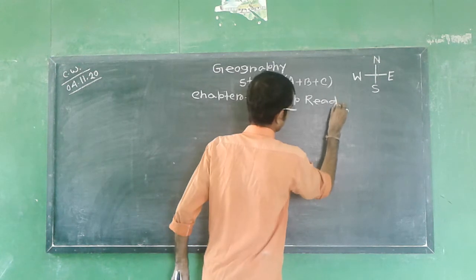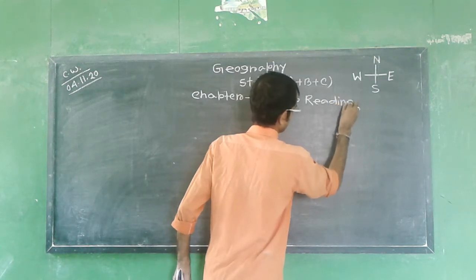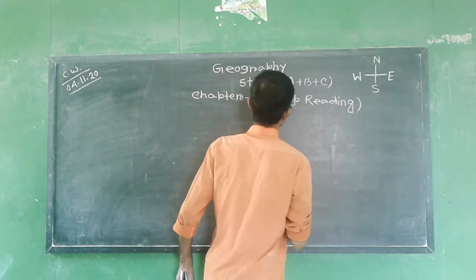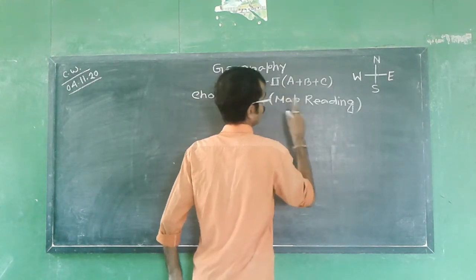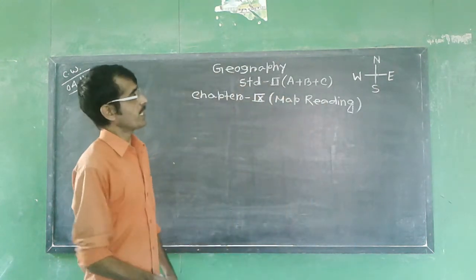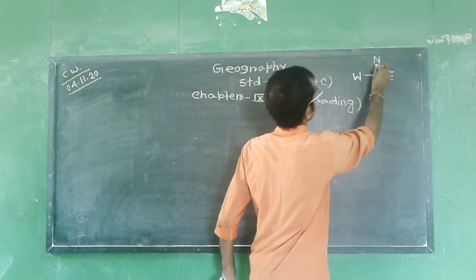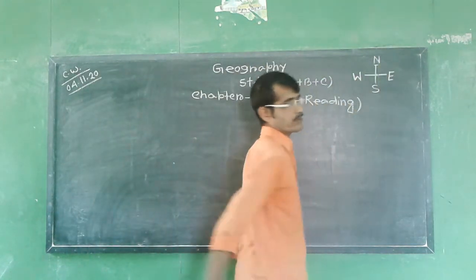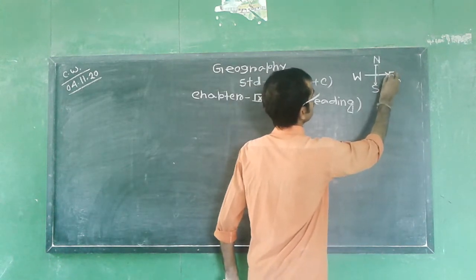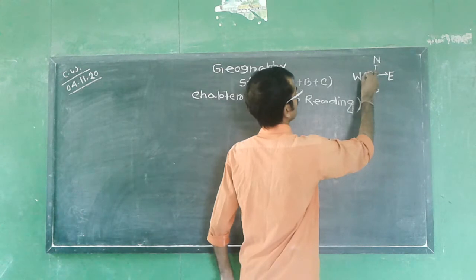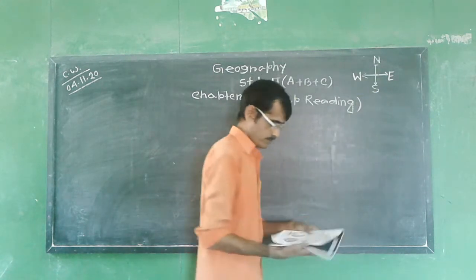Map Reading. We know that the upper side of the map is north, downward is south, right side is east, and left side is west. Okay.